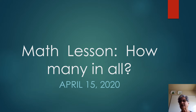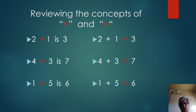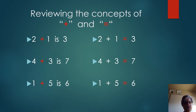Let's go to the next page. On this page, we're reviewing the concepts of the plus symbol, which looks like a T, and the equal symbol, which looks like two lines, one on top of each other. Let's go to our first problem. It says two plus one is three. See the plus? Looks like a T, and it's in red.